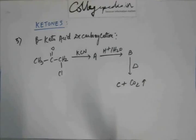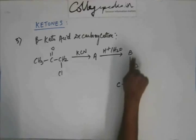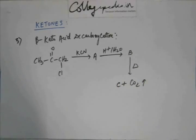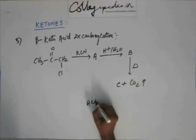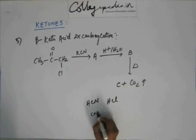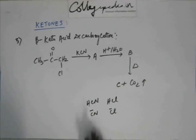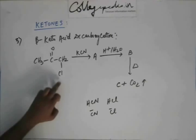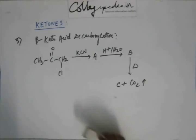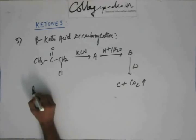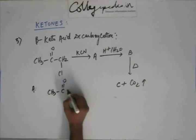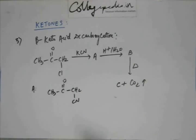I have a gut feeling that B must be a beta-keto acid. Now if B is a beta-keto acid, let's first identify A. What can happen when KCN is added to this substrate? The cyanide ion is a nucleophile. HCN is a weaker acid than HCl, which tells us cyanide ion is less stable than Cl⁻. The less stable species will come in and the more stable one will go out — so the cyanide ion will substitute the chlorine.